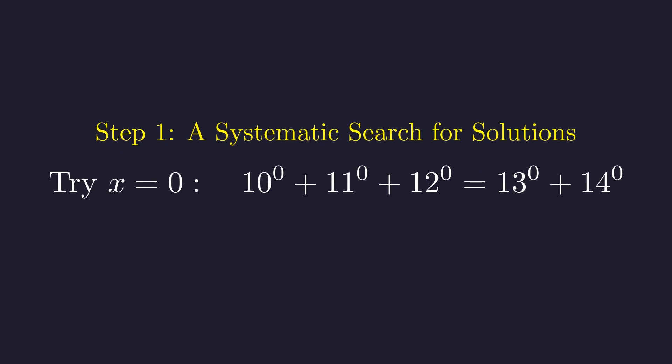Let's start with x equals zero. Remember that any non-zero number raised to the power of zero gives us one. The left side gives us three, while the right side gives us two. Since these aren't equal, x equals zero doesn't work.